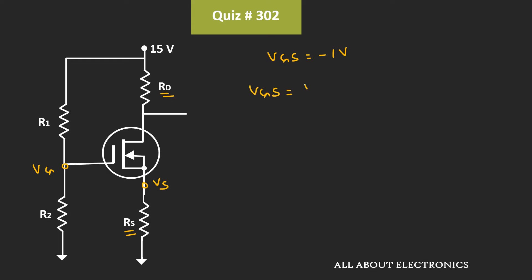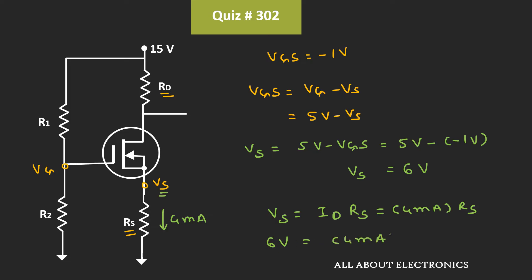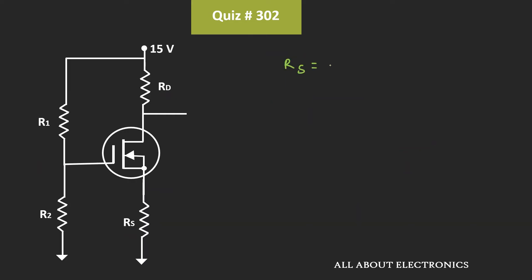VGS is equal to VG minus VS. Here gate voltage VG is equal to 5V, so voltage VS is equal to 5V minus VGS, that is equal to 5V minus 1V, which equals 6V. The current flowing through this source resistor is equal to 4mA, the same as the drain current. So VS equals ID times RS, that is 4mA times RS. Since VS equals 6V, RS is equal to 6V divided by 4mA, which is 1.5kΩ.